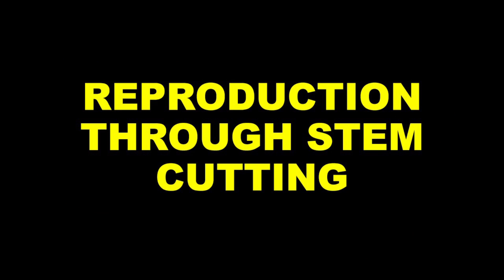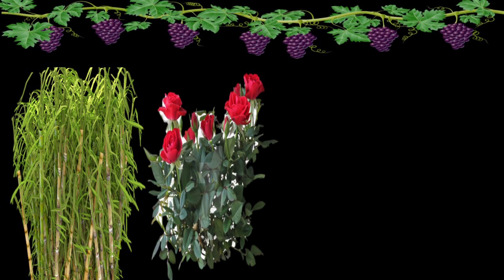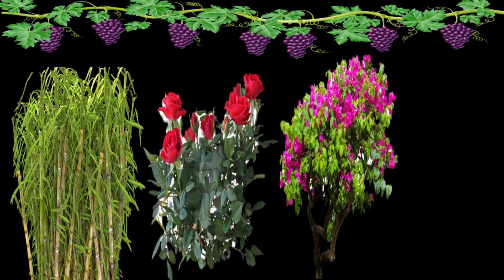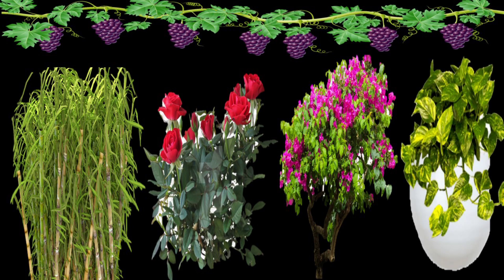The second type is reproduction by stem cutting — cutting the stem in a slanting way and planting it in the ground. The most common example is sugarcane. Other examples include rose, grapes, bougainvillea, money plant, and cactus — these are all common examples of reproduction by stem cutting.